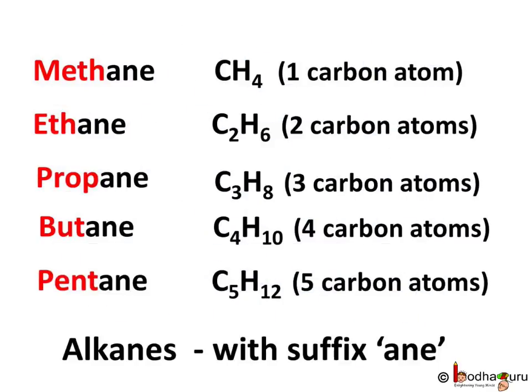And thus we get: meth plus -ane gives methane; eth plus -ane gives ethane; prop plus -ane gives propane; but plus -ane gives butane; pent plus -ane gives pentane. So remember, all alkanes end with the suffix -ane, that is A-N-E.